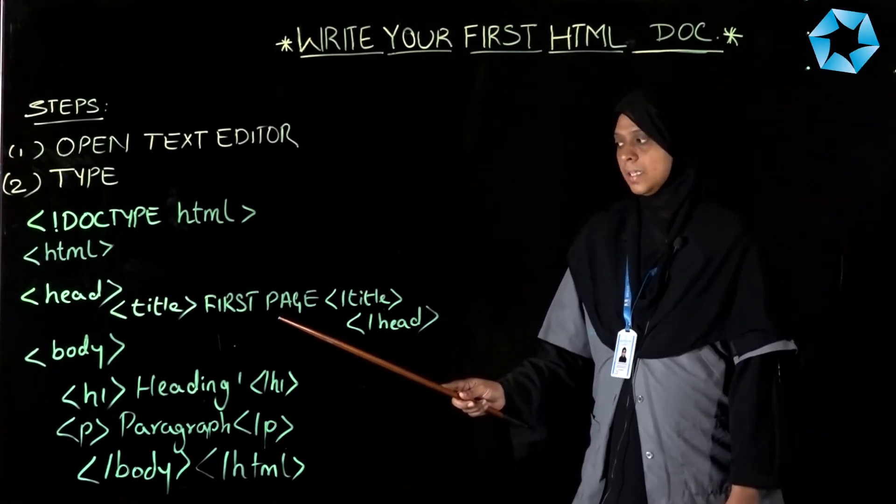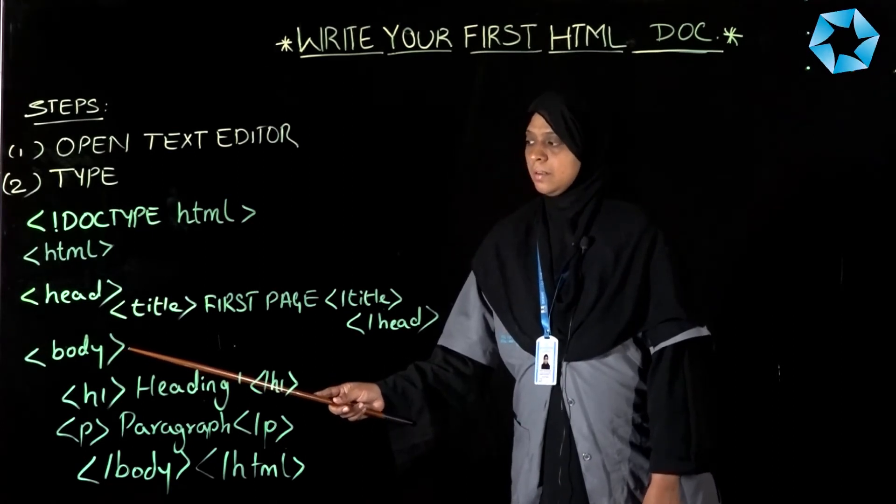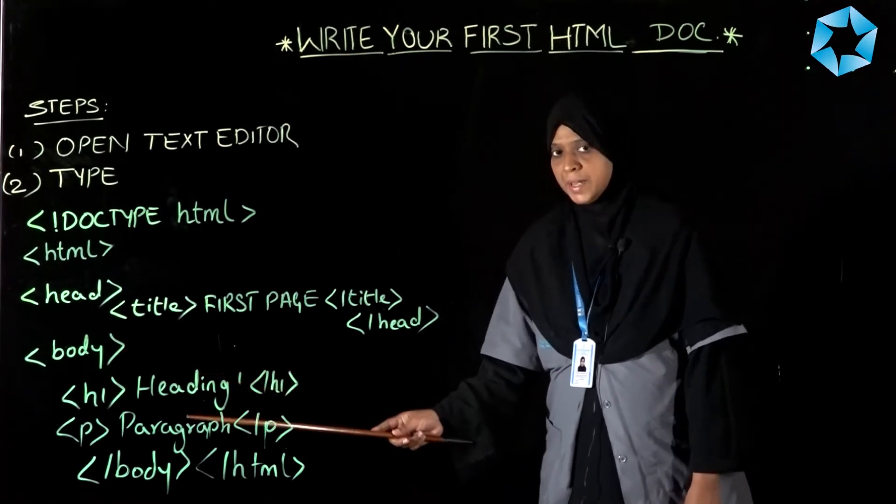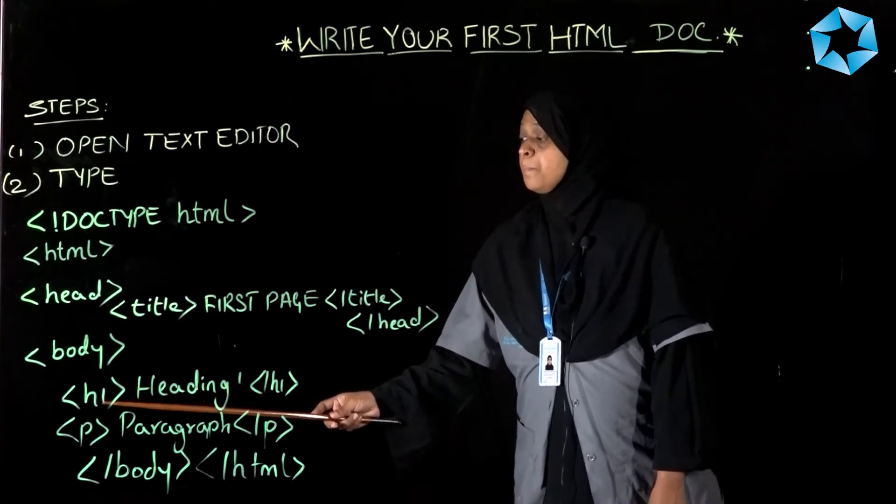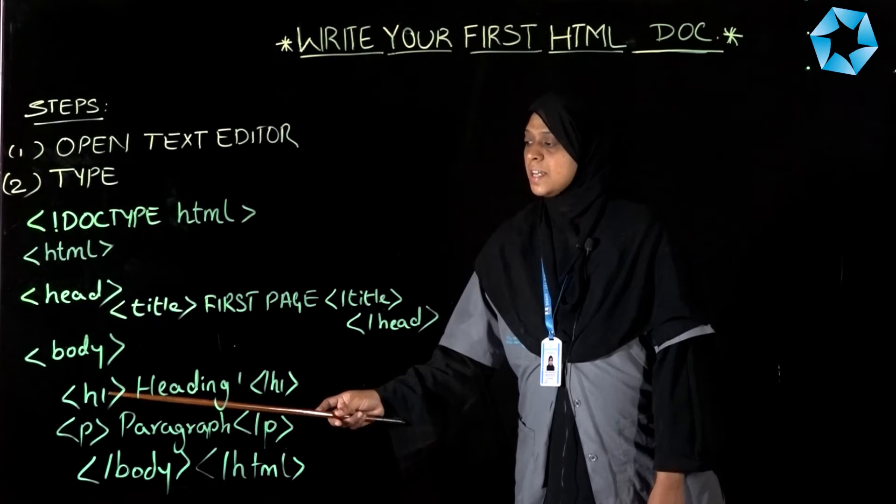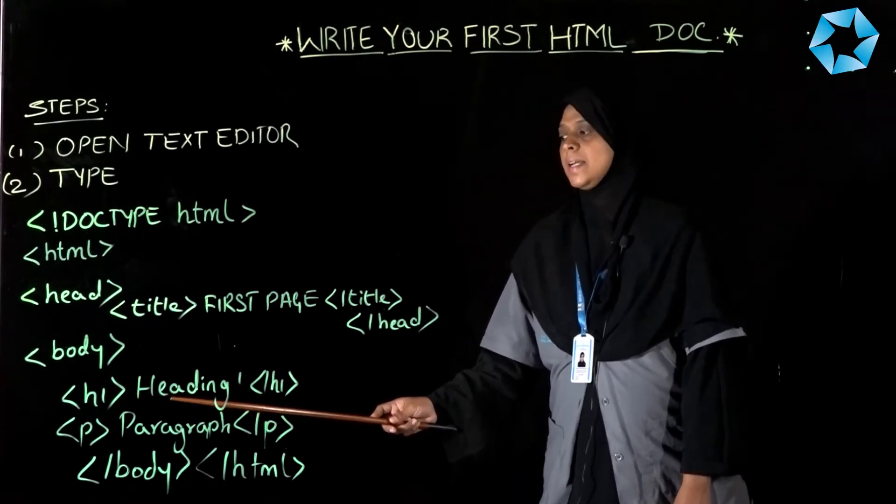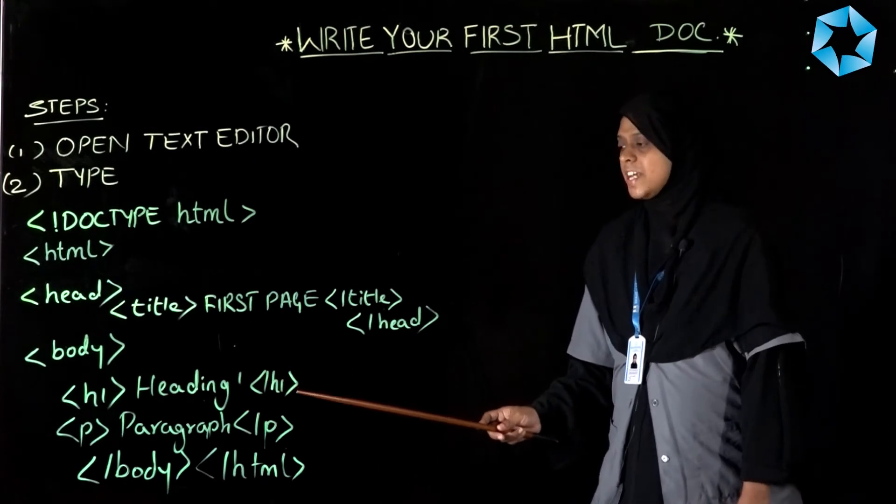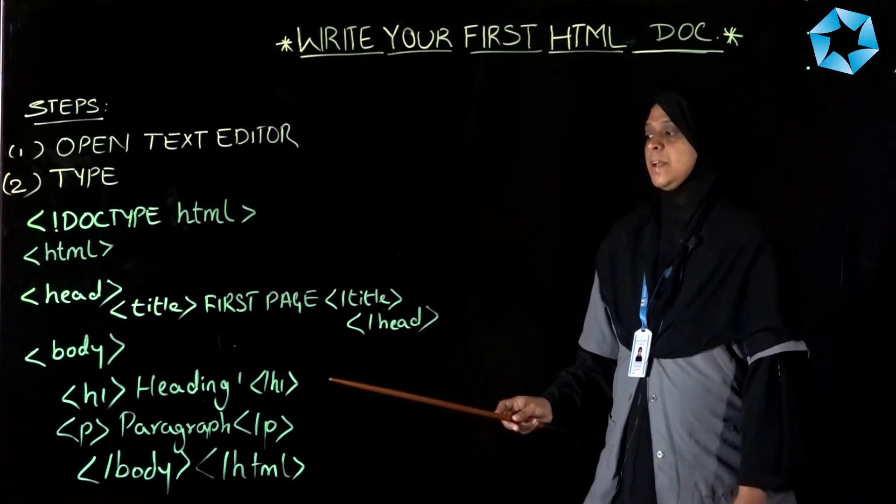The body tag shows the HTML document's visible part. In this tag, we use the h1 tag, which is used to give headings to the HTML document. In HTML, we can have h1 to h6 level headings.